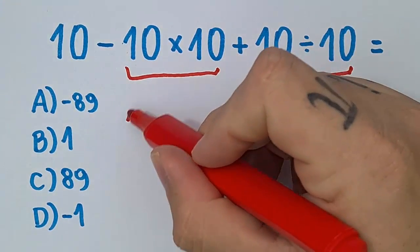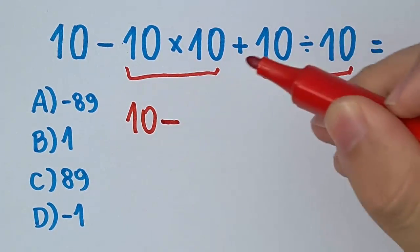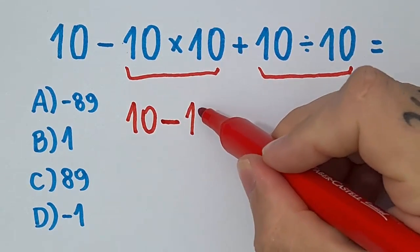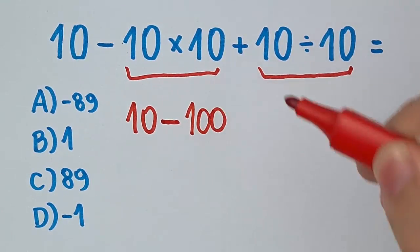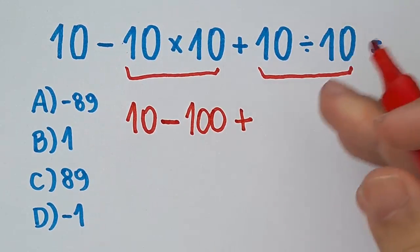We're gonna have 10 minus 10 times 10 is equal to 100 plus 10 divided by 10 is equal to 1.